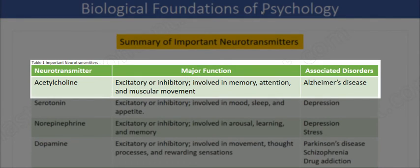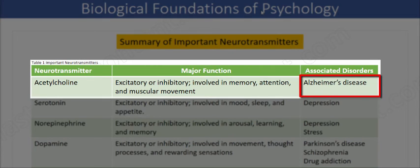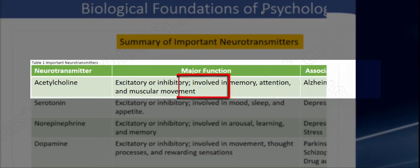Acetylcholine is also found in many neurons in the brain, and the underproduction of acetylcholine plays an important role in Alzheimer's.